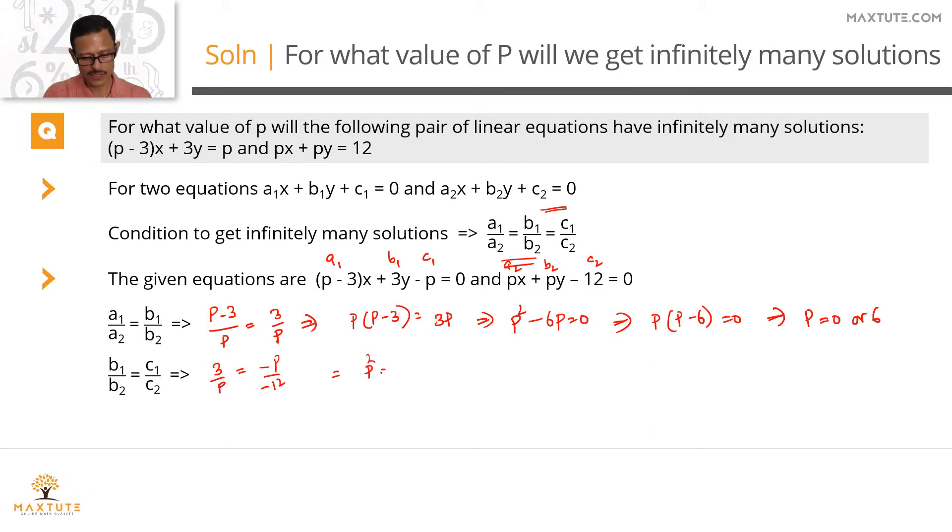We'll get p square equals 36. So what are the values that p can take if p square equals 36? p could be 6 or p could be minus 6.